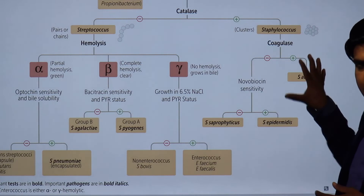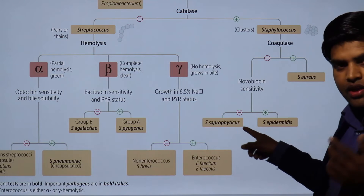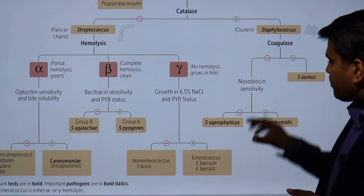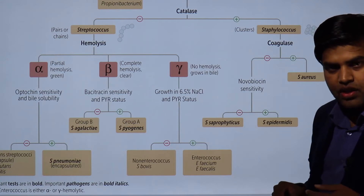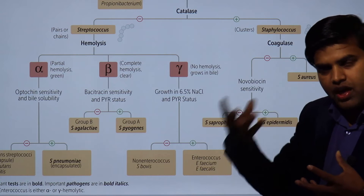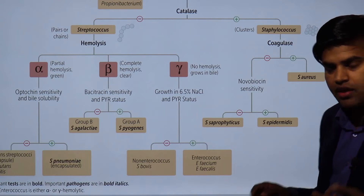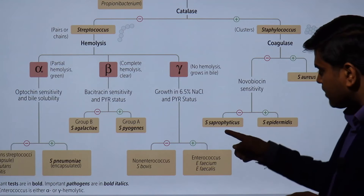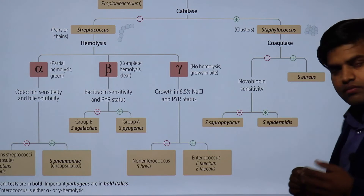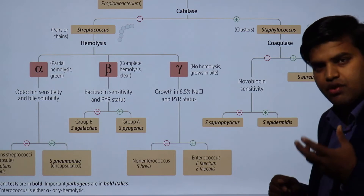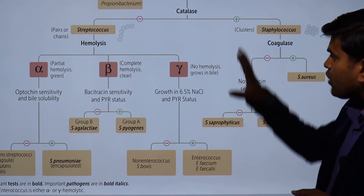If the organism is gram positive, catalase positive, but coagulase negative, it could be either S. saprophyticus or S. epidermidis. We differentiate these two using the novobiocin test: an organism that is novobiocin sensitive is S. epidermidis, while novobiocin resistant is S. saprophyticus. S. saprophyticus is responsible for urinary tract infections in sexually active females, while S. epidermidis causes implant and catheter infections and neonatal sepsis in newborns.